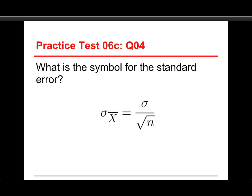And, you know, here's the formula that we've seen a million times. Sigma sub x bar, which is the symbol for the standard error, is equal to the standard deviation divided by the square root of n. Okay, last question.